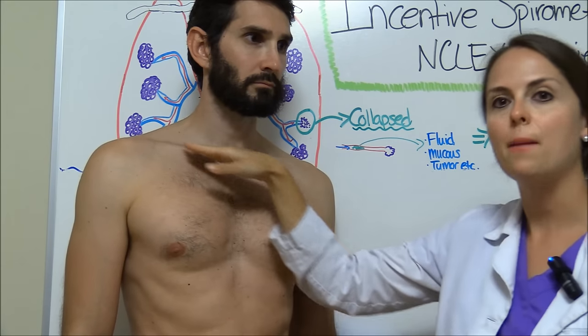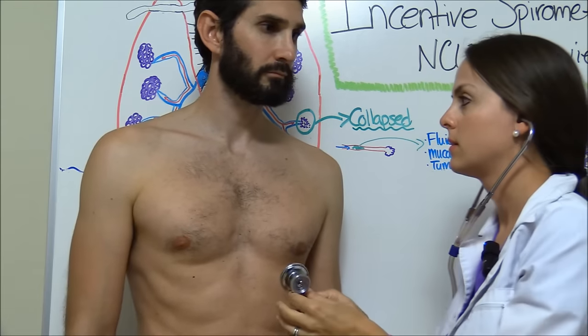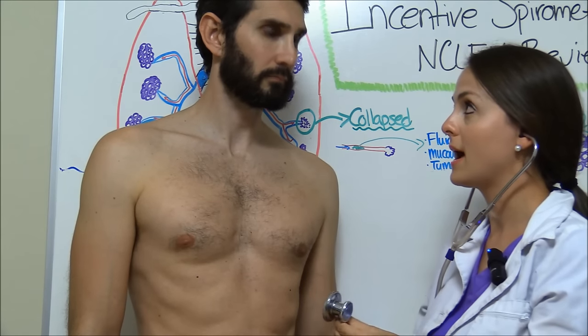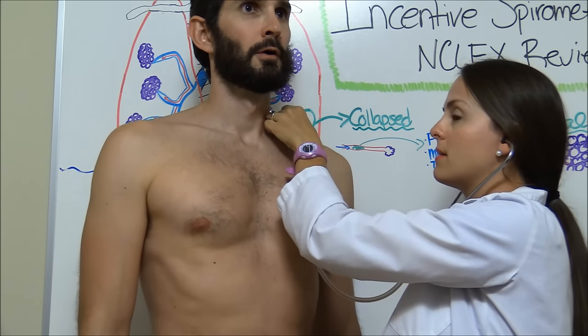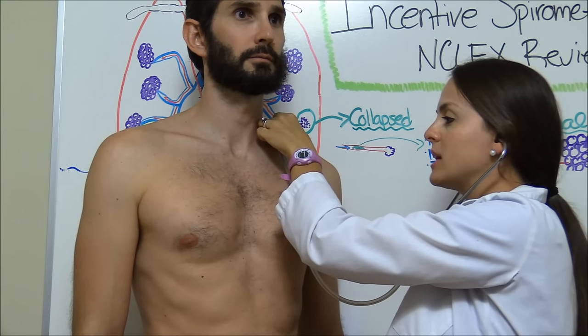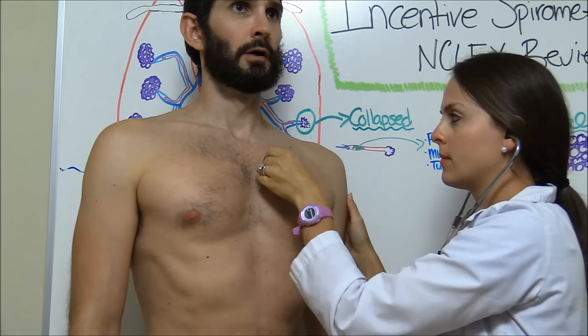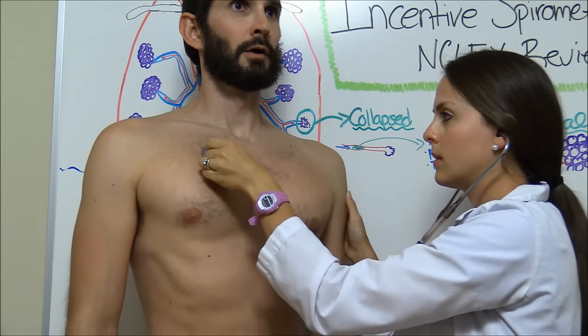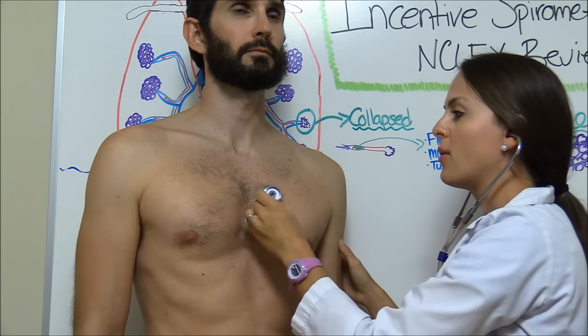So we're going to start at the top and work our way down, starting on one side and then comparing that side, to see if we're hearing the same thing on this side as on that side. We're starting up at the apex right above the clavicle. Now we're going to inch down to the second intercostal space, which is where we're going to start listening to our upper lobes. Then we're just going to inch down a little bit to about the third intercostal space and listen there, then go over and compare it.